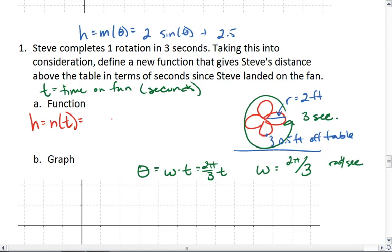it's still going to be sine, but we're going to take out this theta and put in 2πt/3. We still want to multiply by the amplitude and we still want to add 2.5 to the end.